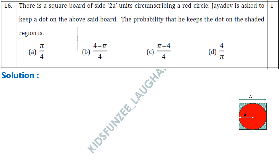Question 16: There is a square of side 2a units circumscribing a red circle. The square side is 2a, and since the circle touches all sides, the diameter of the circle is also 2a, so its radius is a. Jaidev is asked to place a dot on the board — what is the probability he places it on the shaded region (the corners not occupied by the circle)?